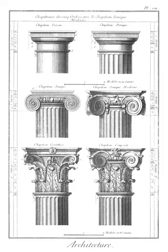Lunette: a half-moon shaped space, either masonry or void.